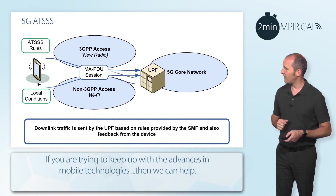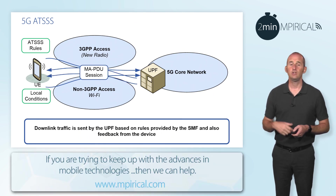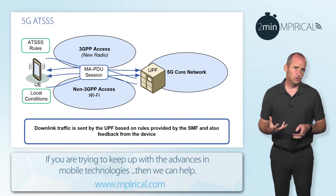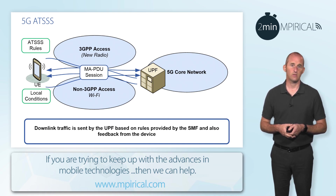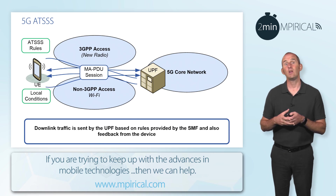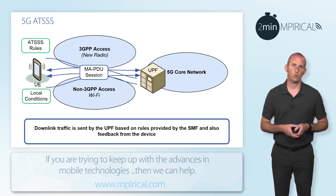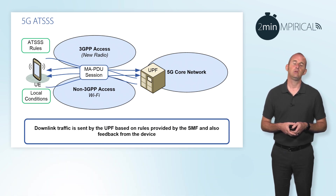For the downlink direction, the UPF — the user plane function — must also be configured with these rules to determine which access networks should be used for downlink traffic.